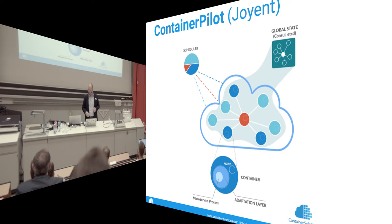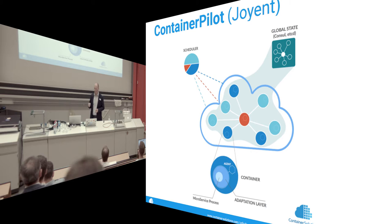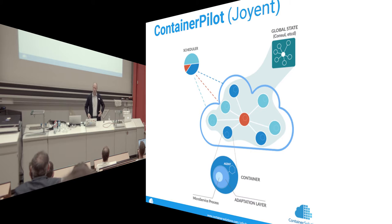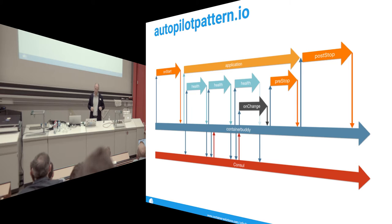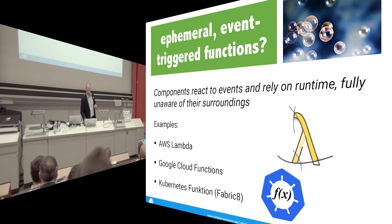The more practical example is ContainerPilot, or autopilot pattern. It's an open source agent — instead of starting your actual service in the container, you start the agent, and the agent starts the service and manages its state. It checks health, does startup tasks like downloading the latest database dump, does cleanup, and reacts to changes from the outside. You configure which other services you depend on, and when dependencies change, it can reconfigure and reload the microservice process. See autopilotpattern.io for more.